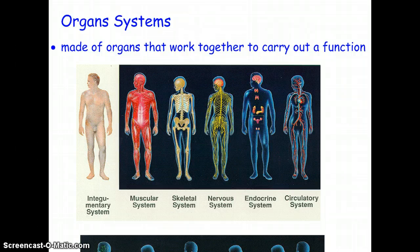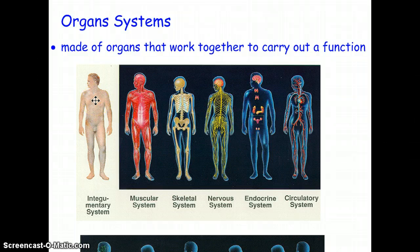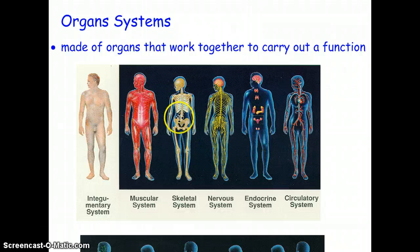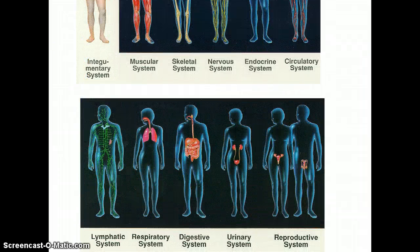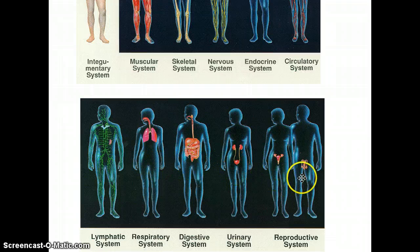When you put organs together, you make organ systems. Here are all 12 organ systems: the integumentary system, which is basically your skin; the muscular system; the skeletal system; the nervous system; and then the endocrine system, the circulatory system, the lymphatic system, the respiratory system, the digestive system, the urinary system, and the reproductive system.